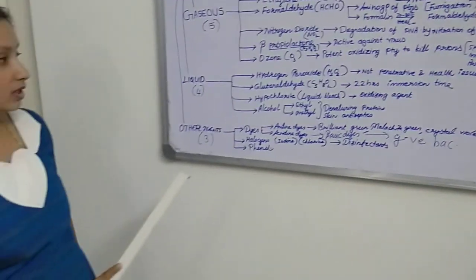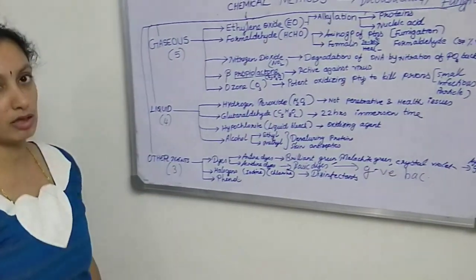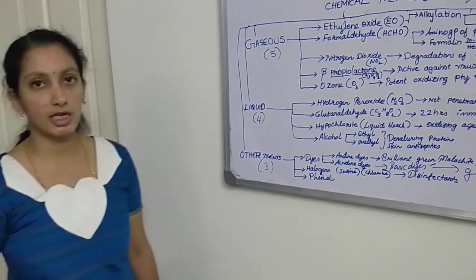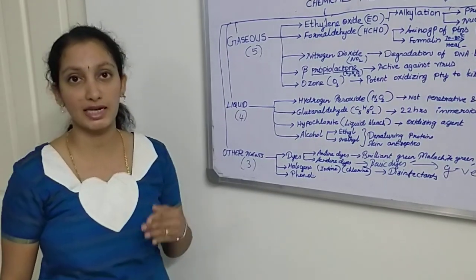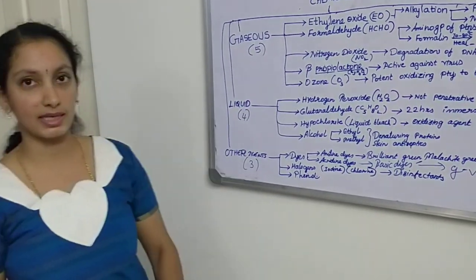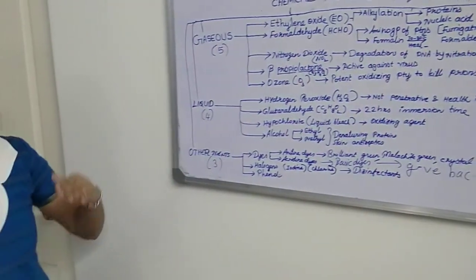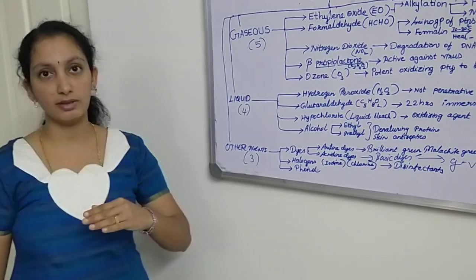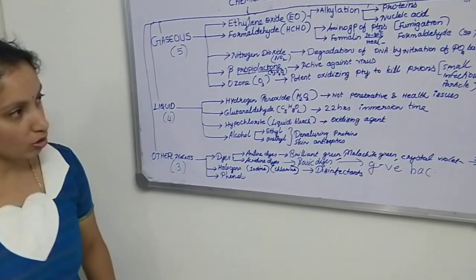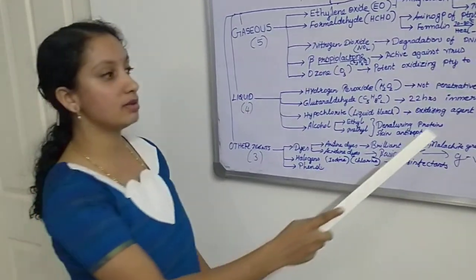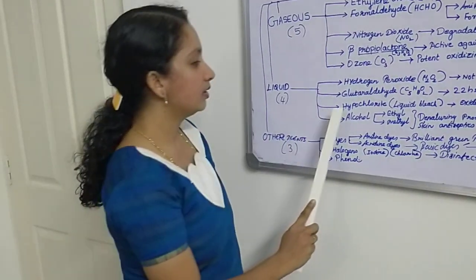The first liquid agent, hydrogen peroxide, has less penetration power compared to other chemical agents, and there are some health issues related to this chemical. The second one, glutaraldehyde, requires a specific immersion time of 22 hours. If the soaking time is not followed, the microorganisms will not be killed.